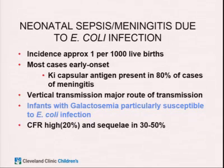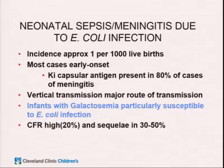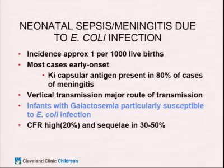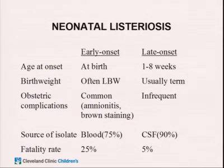E. coli has an incidence of approximately one per 1,000. Most cases are early onset but late onset also occurs. There is a capsular antigen on E. coli responsible for about 80% of meningitis cases — though that detail may not be required for boards. Vertical transmission is the major route. Important board point: babies with galactosemia are particularly susceptible to E. coli infection. Case fatality rate is high and sequelae in survivors are also very high.